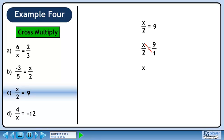Multiply diagonally to get x. Multiply diagonally the other way to get 18. No further steps are needed since we now know that x equals 18.